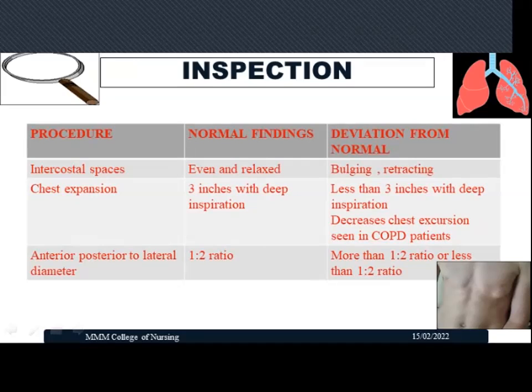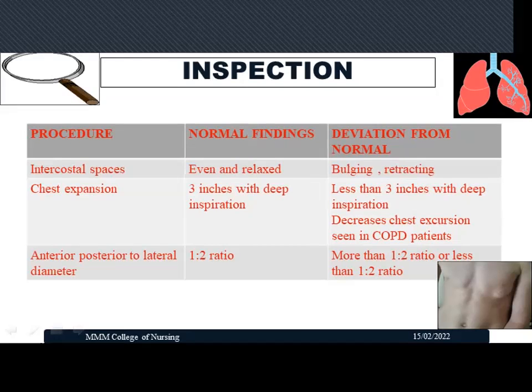Next, assess the anterior-posterior to lateral diameter, which can be measured with an inch tape. The normal ratio between the anterior-posterior and the transverse diameter is 1:2. Any deviation from this ratio — more or less than 1:2 — may indicate abnormal chest shapes such as pectus carinatum, pectus excavatum, or barrel chest.